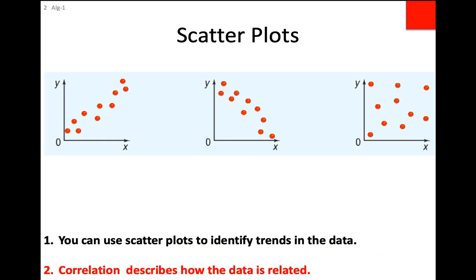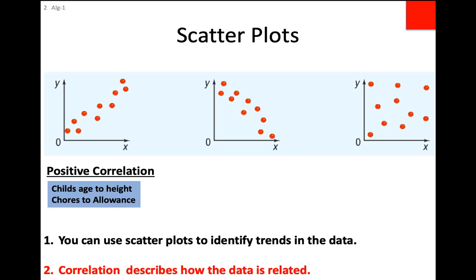We give names to these patterns — it's called correlation. Correlation is just a fancy word for 'something is going on.' There is literally a correlation between the amount of time you spend studying and the grades you get. When the dots go in an upward direction — positive slope — we call that positive correlation. As the x value increases, so does y. Examples: as you get older your height increases, or the more chores you do the more allowance you get.